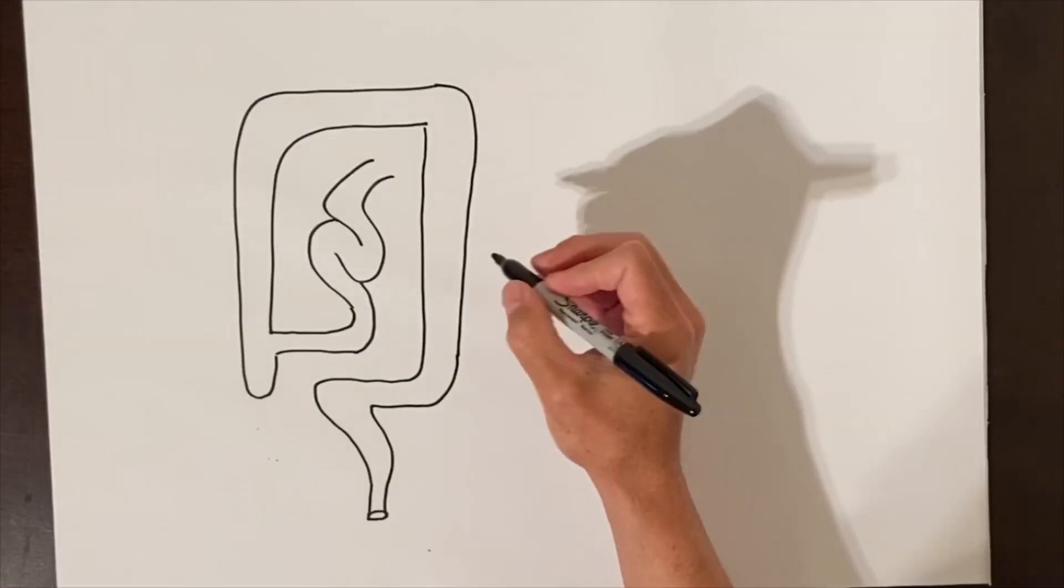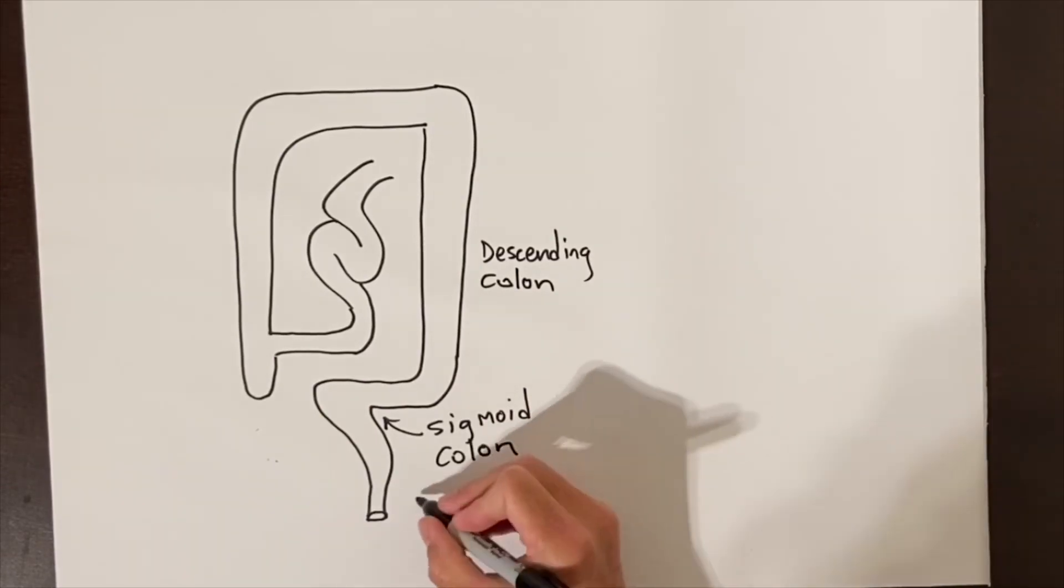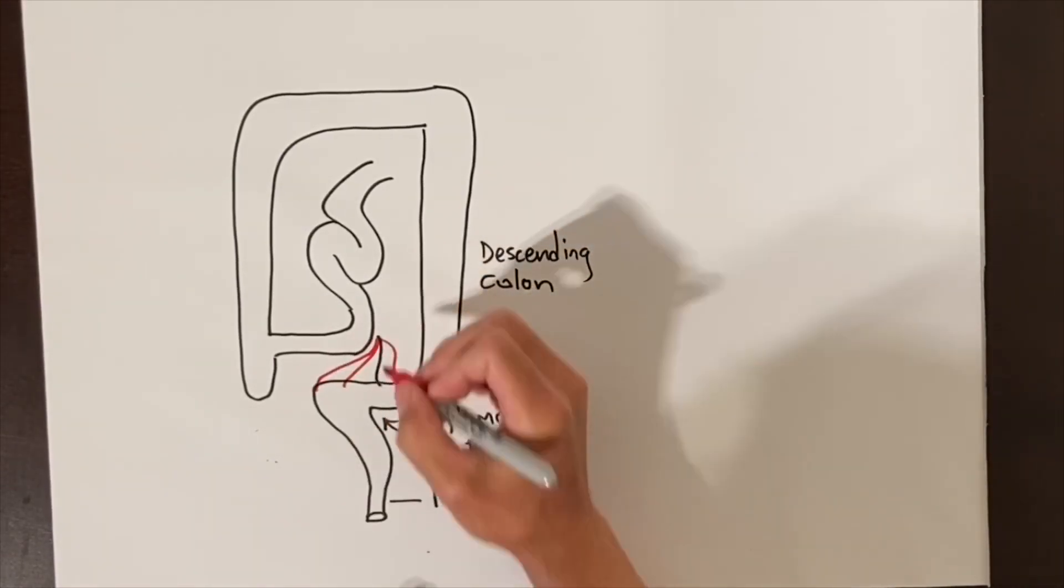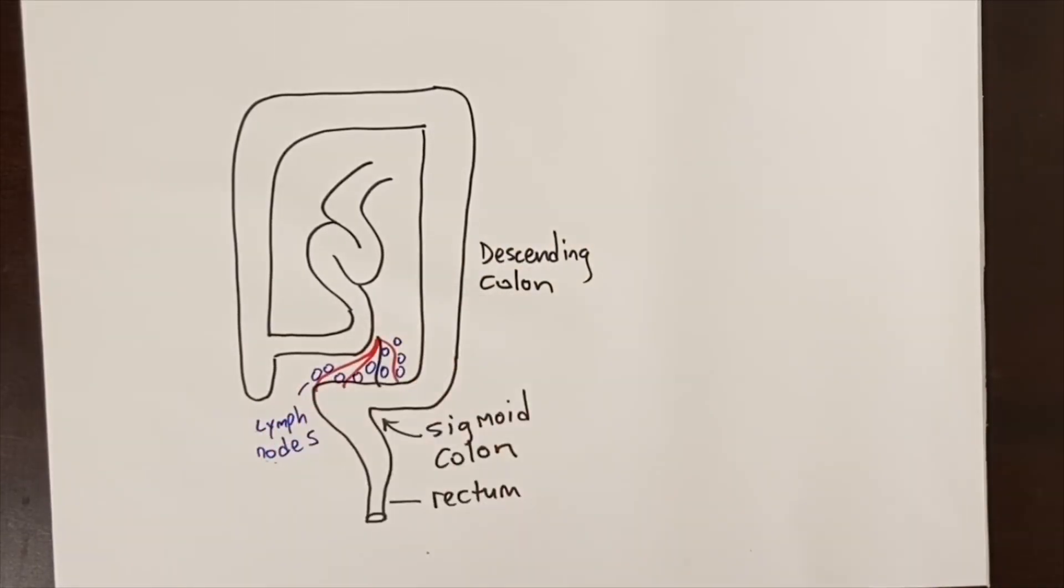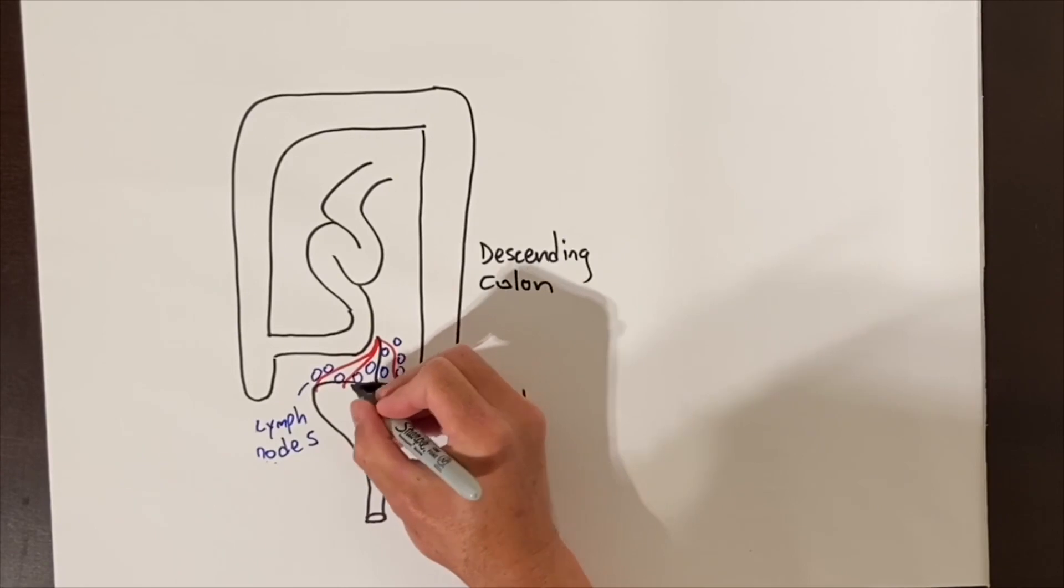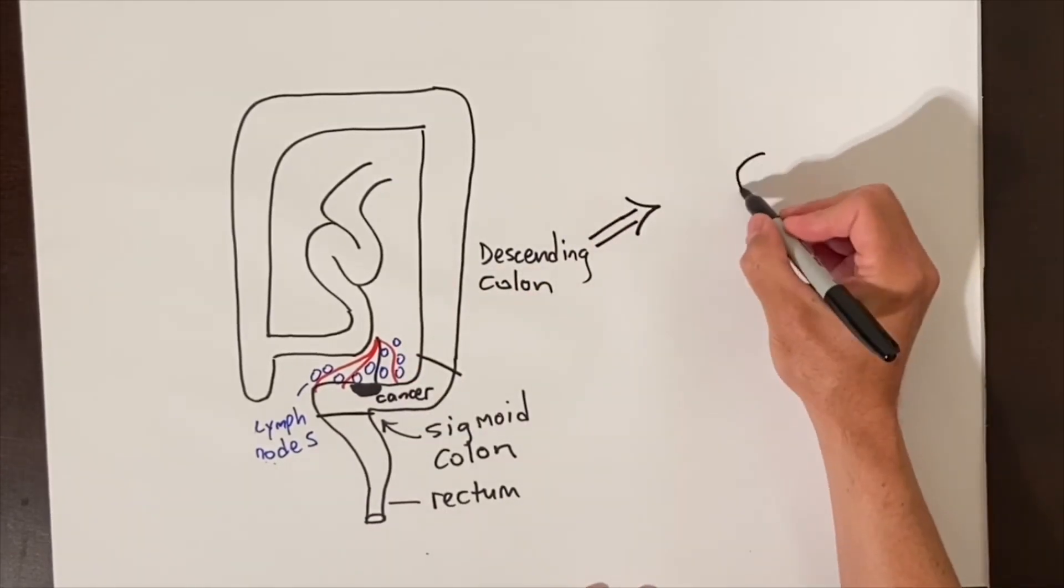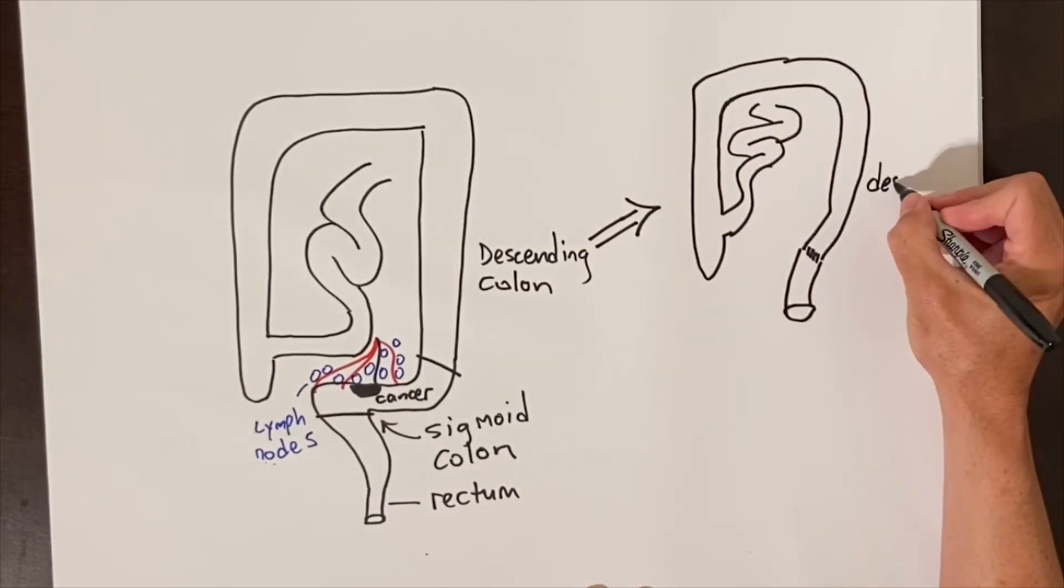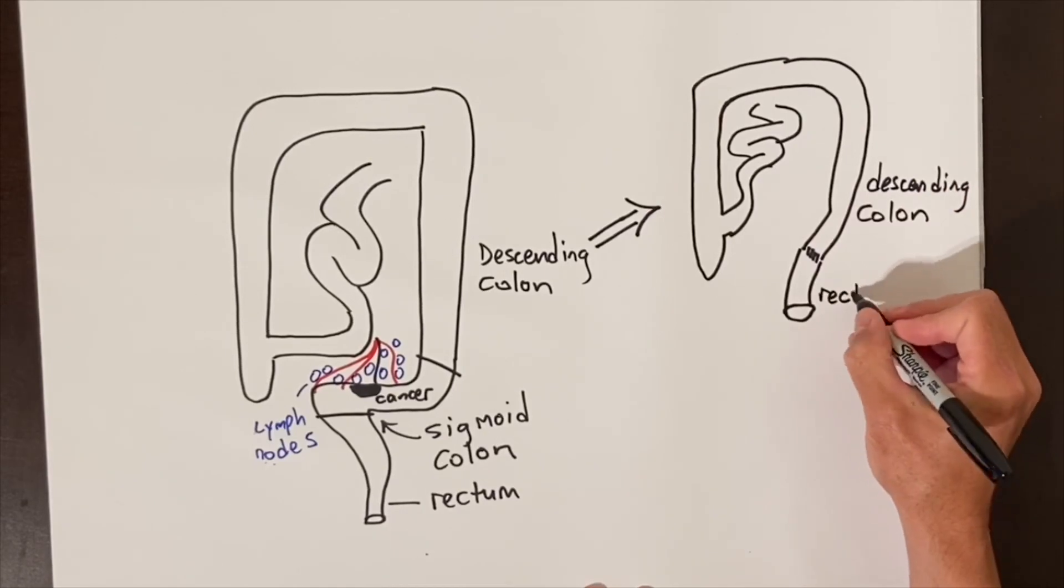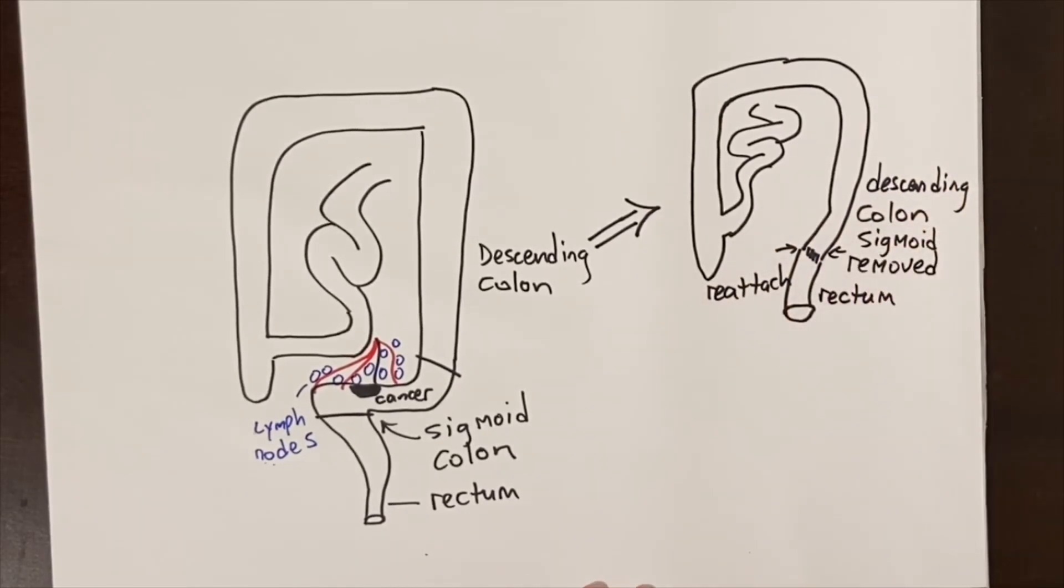Cancer in the descending or sigmoid colon is removed by taking enough colon out to allow for 12 lymph nodes also. Because the sigmoid colon naturally snakes around, it can be easier to remove if cancer is in this floppy section, and we can remove the 12 lymph nodes and blood vessels that are intertwined with the lymph nodes just by removing the sigmoid colon and then pulling the remaining colon together. This would rarely need an ostomy.